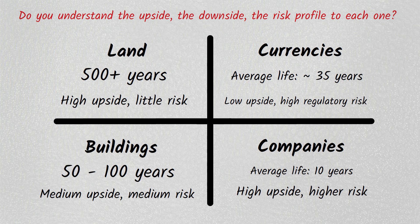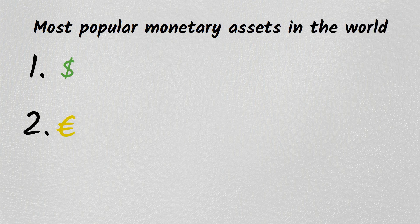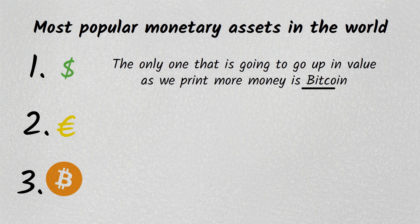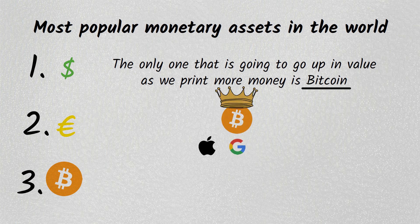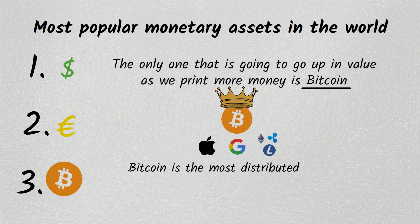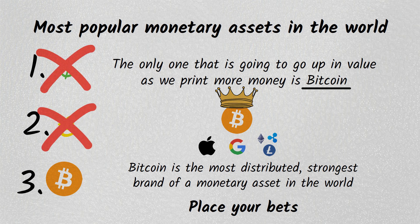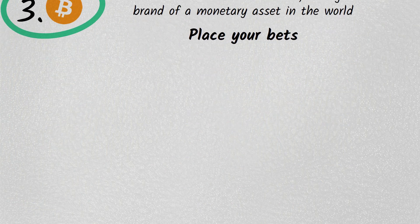You can look at it from first principles: what's the most popular monetary asset in the world? The dollar. The second? The euro. The third is Bitcoin. Of the top three, the only one that's going to go up in value as we print more money is Bitcoin. Everything else — Apple stock, Google stock, every other crypto — is less popular. Bitcoin is the most distributed, strongest brand of a monetary asset. So if you're going to place a bet on a non-sovereign store of value, the dollar is not it, the euro is not it — Bitcoin is the first thing if we just look at distribution.